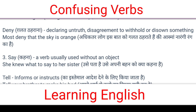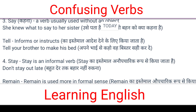'Say' is a verb usually used without an object. For example: 'She knew what to say to her sister' — Usse pata hai usse apni behen ko kya kehna hai. 'Tell' informs or instructs — ka istamal aadesh dene ke liye kiya jata hai. For example: 'Tell your brother to make his bed' — Apne bhai se kaho apna bistar sahi kar le.